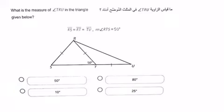The question here is asking what is the measure of angle TRU in the triangle given below. Here we see that RS, RT, and TU are all equal, given that angle RTS is 50 degrees.